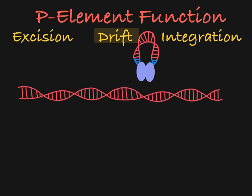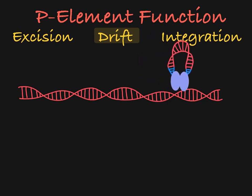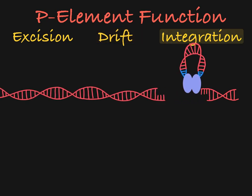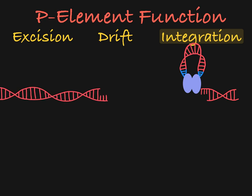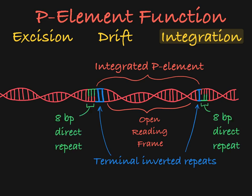The transposon will then move with the transposase — the drift step — to the recipient site, where the transposase will cut the DNA and facilitate the insertion of the transposon into the recipient site. As you can see, because of the way transposase cuts the recipient site, the integrated transposon will always be flanked by eight base pair direct repeats originating from the genomic sequence of the insertion site. This is a result of the transposase creating sticky ends on either end of the transposon insertion.